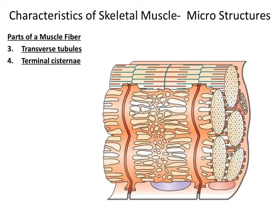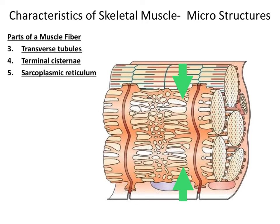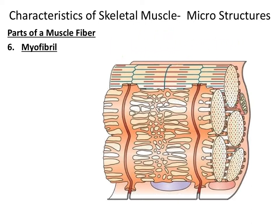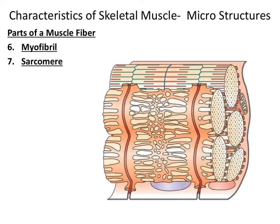Attached to the terminal cisternae is the sarcoplasmic reticulum, which is a network of tubules whose function is to store calcium, which will be released by the terminal cisternae. The next microstructure of a skeletal muscle fiber is the myofibril. Recall that a muscle fiber consists of a bundle of myofibrils. Myofibrils are long cylindrical structures made up of tiny little contractile units called sarcomeres, and it is within these sarcomeres that you find the myofilaments, actin and myosin.